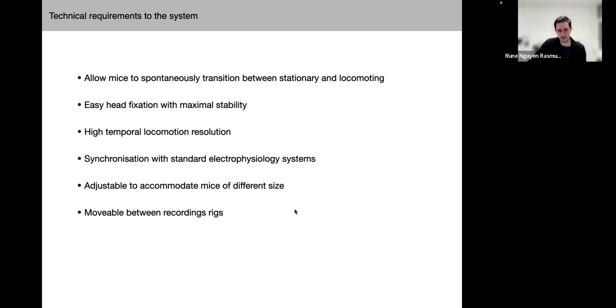Further, because we were looking at potentially rather fast-occurring dynamic changes in the brain, it also needed to provide high temporal behavioral state resolution, and it also needed to be as simple as possible to synchronize our recordings with standard electrophysiology systems. And finally, in addition to these requirements, we figured it would probably also be a strength if the system could accommodate mice of different sizes and with different needs in terms of where they are most comfortable on this treadmill. Also, because we are using microscopy techniques and other recording modalities in the lab, we wanted it to be easy to move the treadmill between recording rigs.